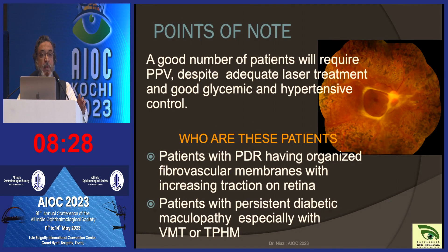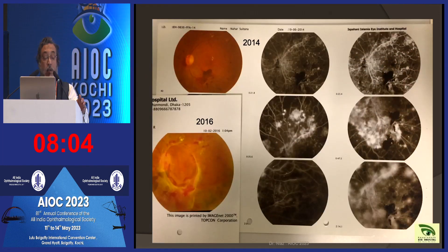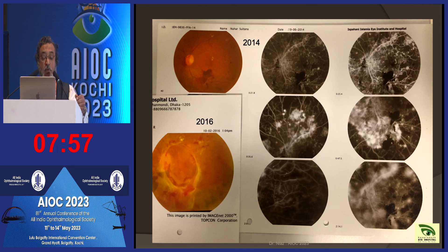As seen in angiograms after PRP, membranes can still develop, so we have to keep seeing patients and proceed to surgery when needed. In this particular case, a patient presented in 2014 with a frank case of PDR, was lost to follow-up, received no treatment, and after two years membranes had formed and the patient went into blindness.